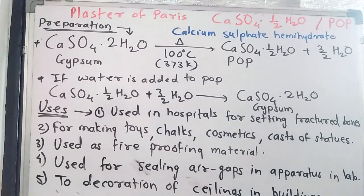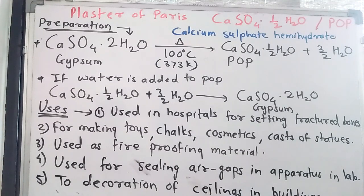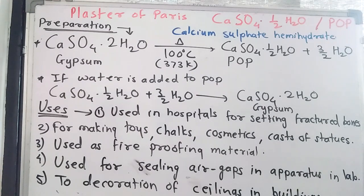Plaster of Paris has various uses. It is used in hospitals to set fractured bones in the proper position. It is used for making toys and casts for statues. It is also used as a fireproofing material, in chemical laboratories for sealing apparatus to make it airtight, and most importantly for decoration of roofs in houses and buildings.